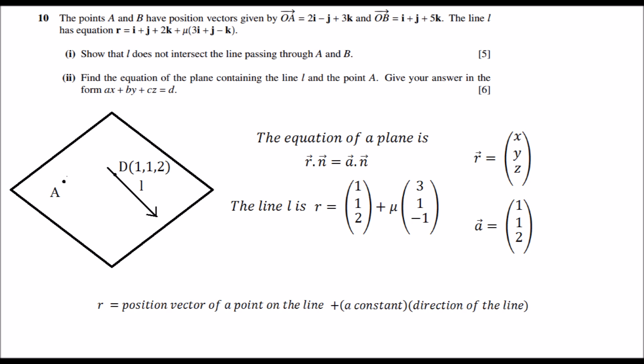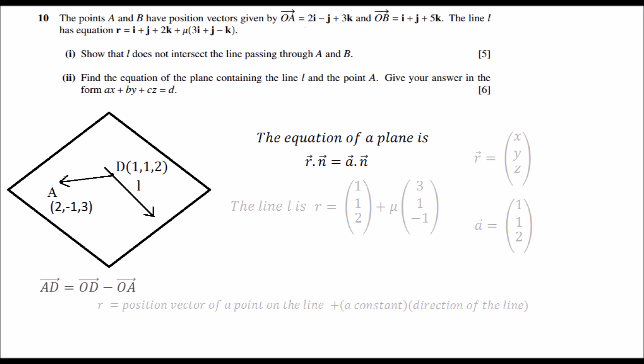Now let's move on. To find the normal to the plane n, we need two vectors lying on the plane which are not parallel to each other. One is the direction of the line L, and the other one is the direction of AD. So let's find the direction of AD vector, which is OD minus OA.